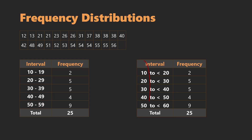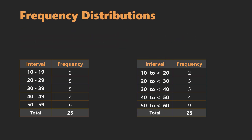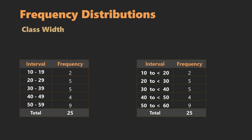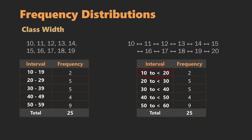We will refer to the starting values as the lower limits and the ending ones as the upper limits. Note that the upper limits are not included in their respective intervals. The class width is defined as the difference between two consecutive lower limits or the difference between two consecutive upper limits. If the values are discrete, from 10 to 19, we have 10 discrete points; if continuous, we have 10 units of equal distances between 10 and 20. Either way, the class width is 10.